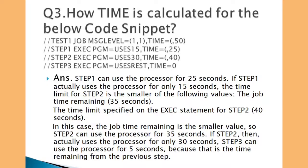If step two actually uses the processor for only 30 seconds, step three can use the processor for 5 seconds, because that is the time remaining from the previous step and TIME=0 is coded on step three. If you calculate the entire time consumed by all the steps, it will be equal to or less than 50 seconds. At any point, if it goes beyond 50 seconds — which is coded on the job statement — then the job will terminate.